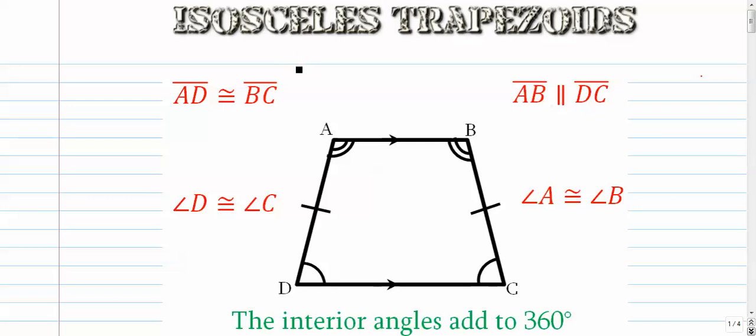All right, as promised, isosceles trapezoids are next. On your screen here, you see a ton of information. Isosceles, first and foremost, means that the left and right legs are congruent. So the segment AD is congruent to segment BC.